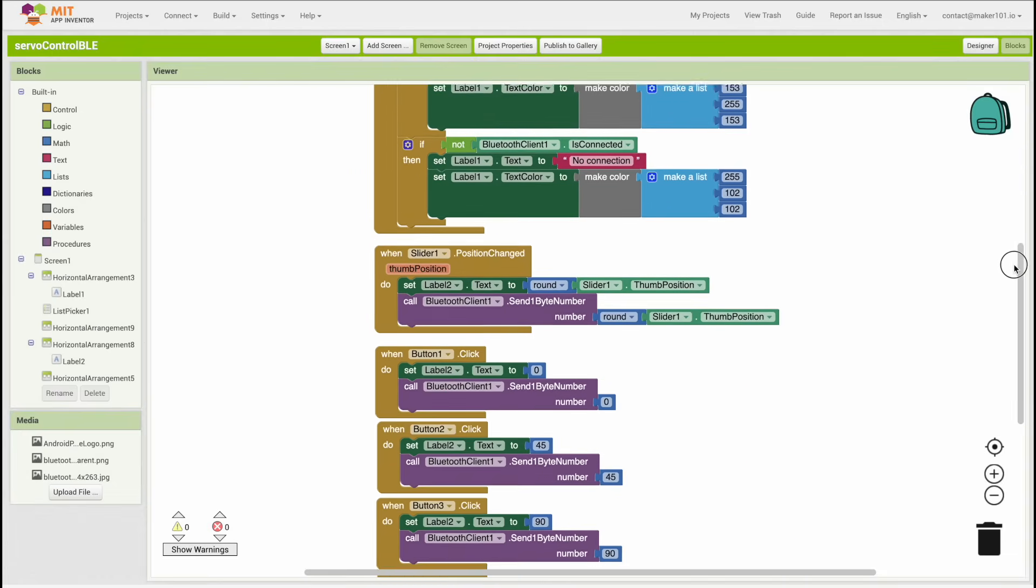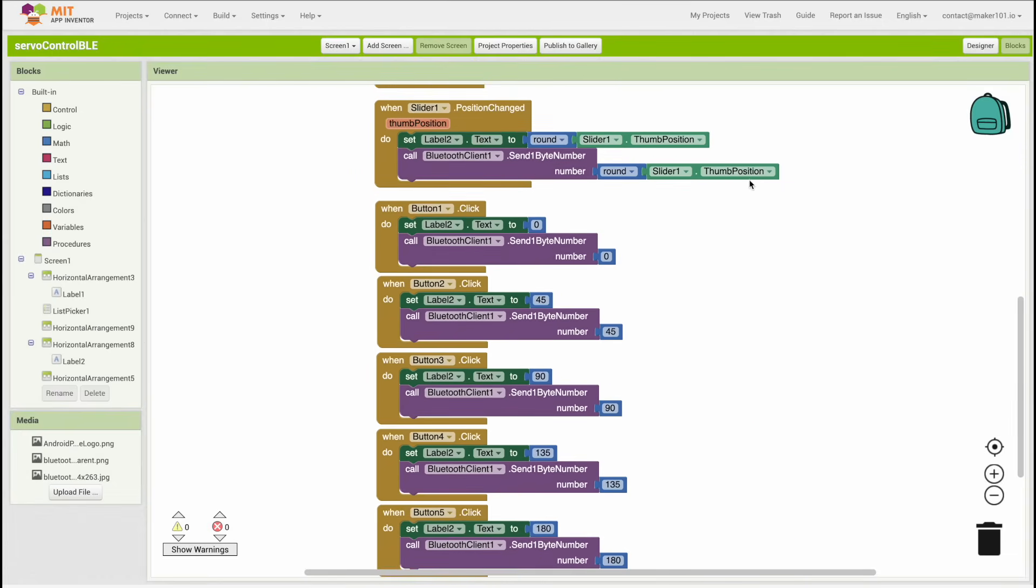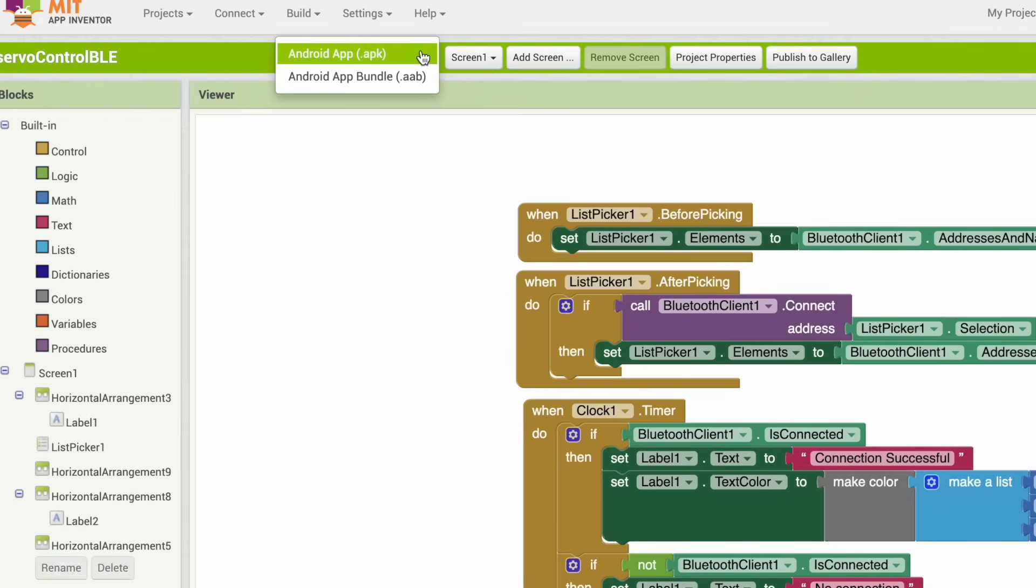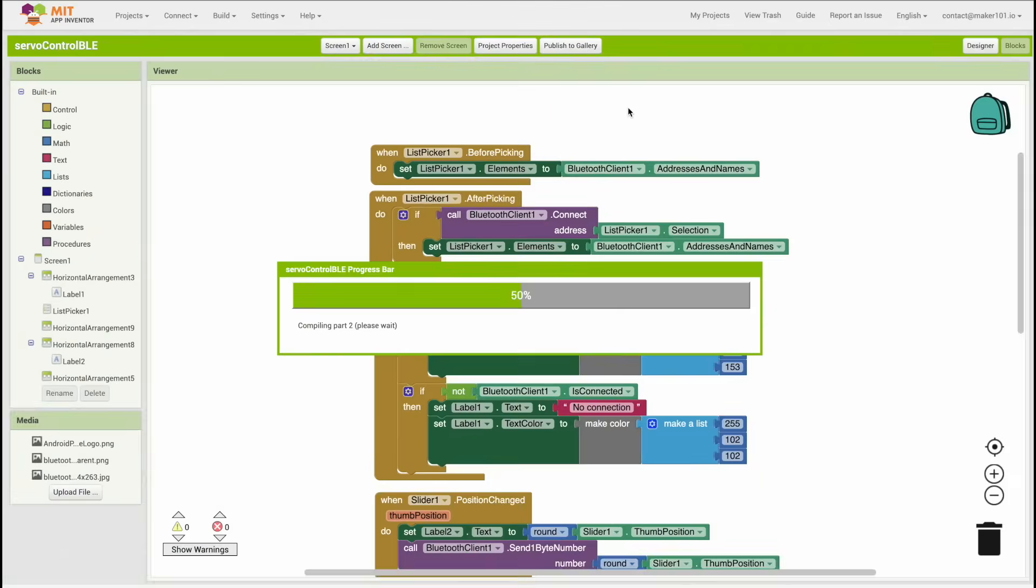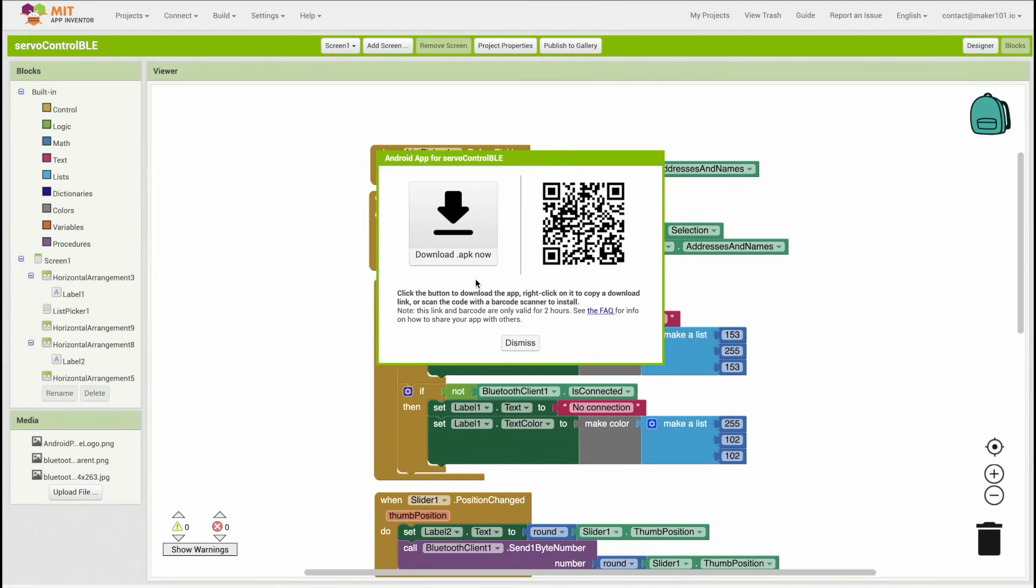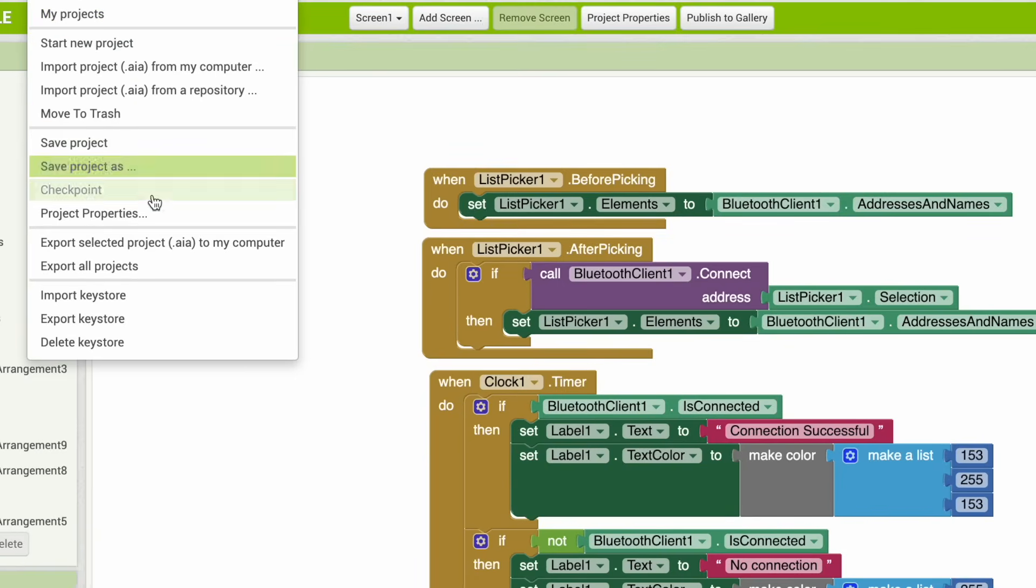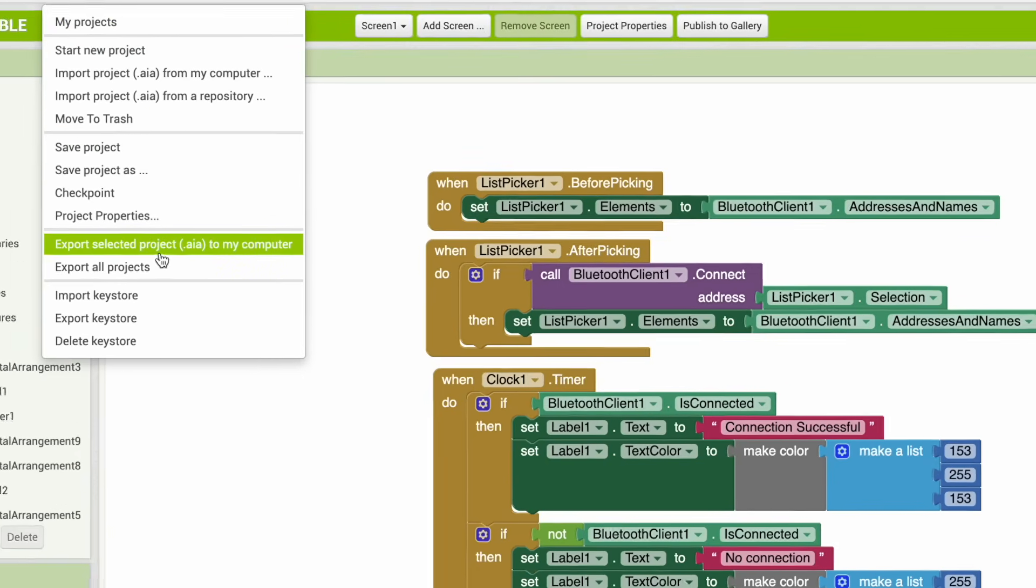To get the app on your device, you can use the Android app option from the Build tab. Also, the project file of the application is shared, and you have the opportunity to import this file into App Inventor and edit it.